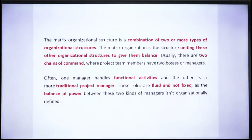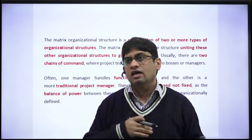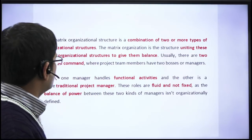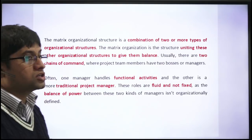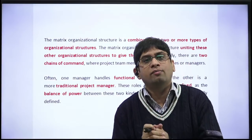Matrix organization structure is actually the combination of two or more different types of organizational structures. What we do is combine different organizational structures in a balanced way. There are two chains of command — an employee reports to both the project manager and the functional manager. Functional activities are handled by the functional manager and the project is handled by the project manager. These roles are very fluid — not clearly defined — and that is one main disadvantage of matrix organization.